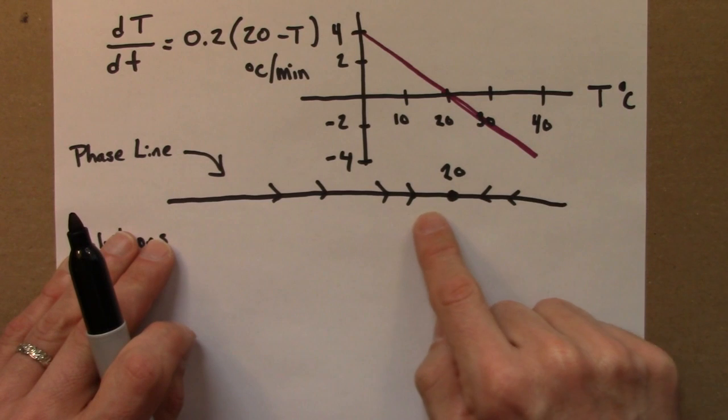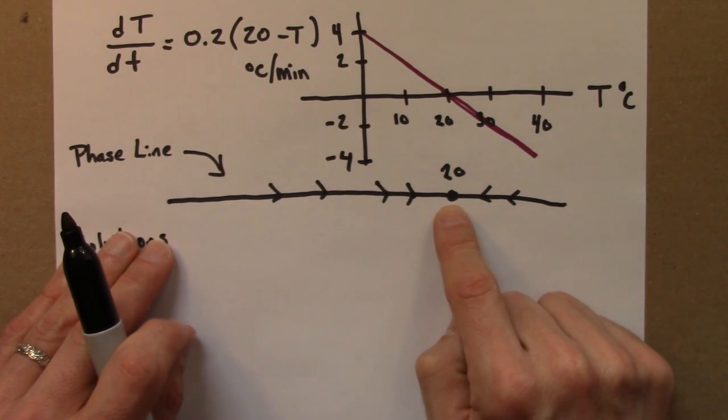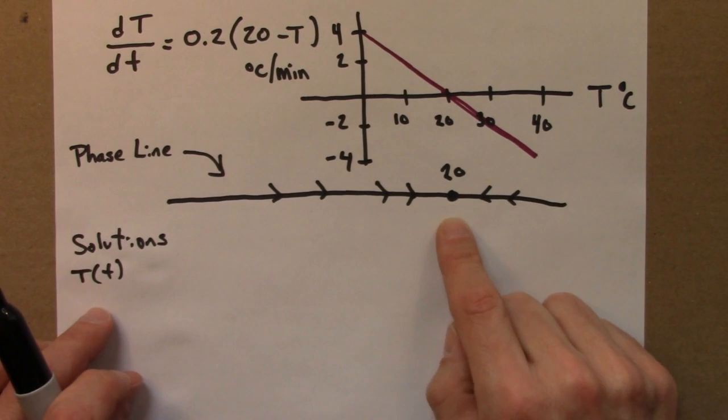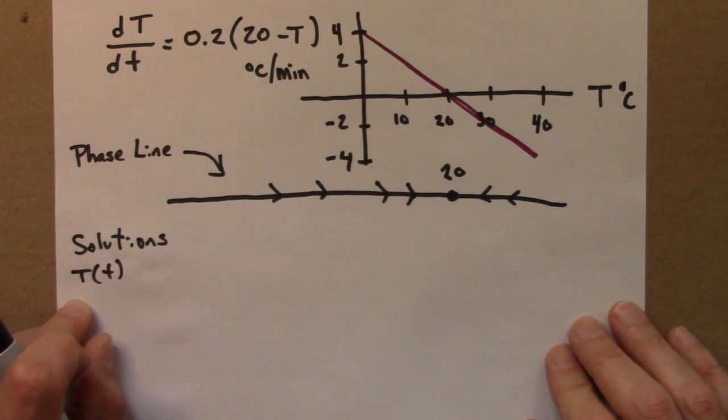And here's the phase line. We have a stable attracting fixed point at 20, and we can use this to sketch solutions T(t).